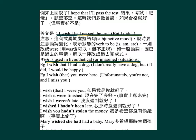Wish is used in hypothetical or imagined situations. For example: 'I wish that I had a dog' — I don't really have a dog, but if I did I would be very happy. 'I wish that you were here' — unfortunately you are not, and I miss you. 'I wish that I were you'（如果我是你就好了）. 'I wish it were finished'（现在完了是几好呢）— 但是事实上就是未完。'I wish I weren't late'（我如果没有迟到就好了）. 'I wish you hadn't stolen the money'（我几希望你没有偷钱，因为事实上你就偷了）.